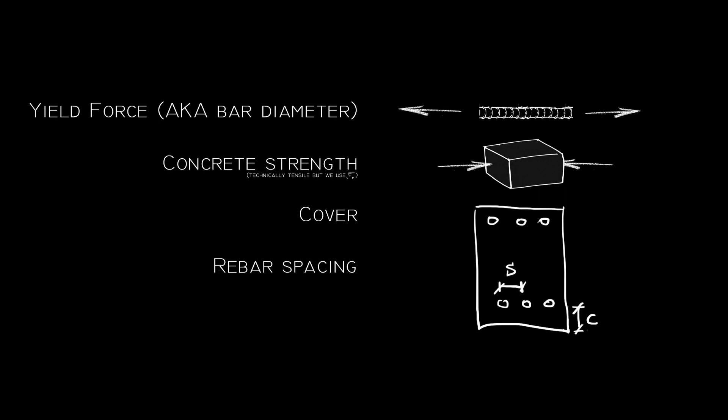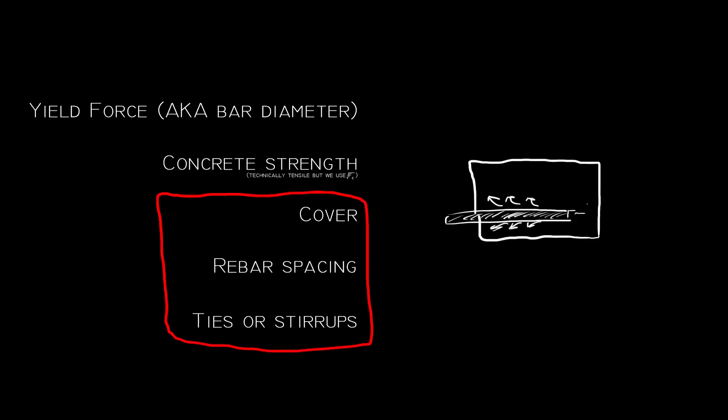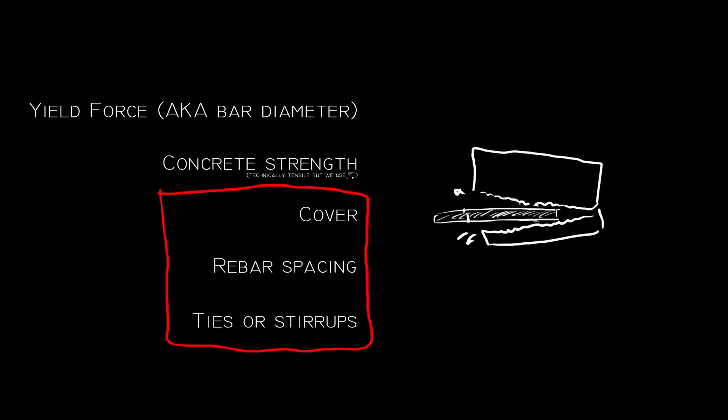its cover, the center to center spacing of the rebar, and the type of ties and stirrups used. The last three factors might seem unimportant, but they're there because, apart from the bar pulling out, splitting of the concrete can also occur due to the outward forces of the rebar's ribs. Cover, spacing and stirrups prevent this from happening.